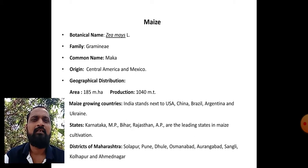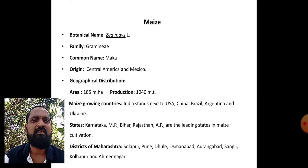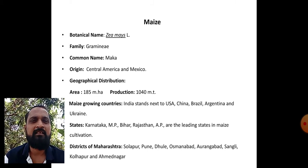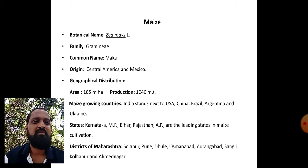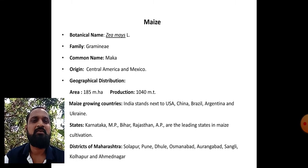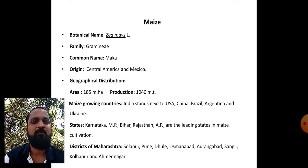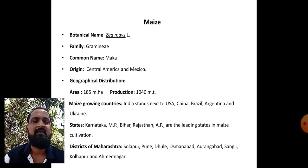As far as geographical distribution is concerned, maize crop is cultivated over 185 million hectare area in the world with a production of 1040 million tons. USA, China, Brazil, Argentina, and Ukraine are major maize growing countries. In India, maize stands next to USA in terms of area as well as production. Karnataka, Madhya Pradesh, Bihar, Rajasthan, Maharashtra, and Andhra Pradesh are the leading states.